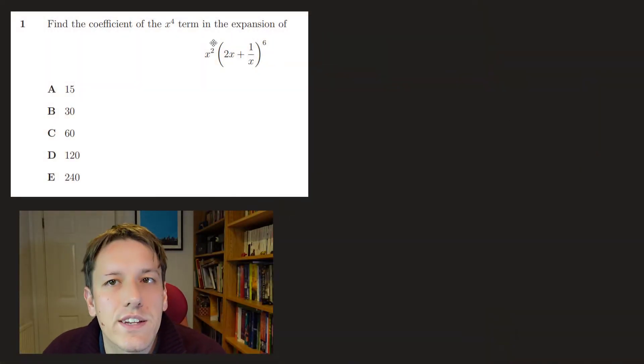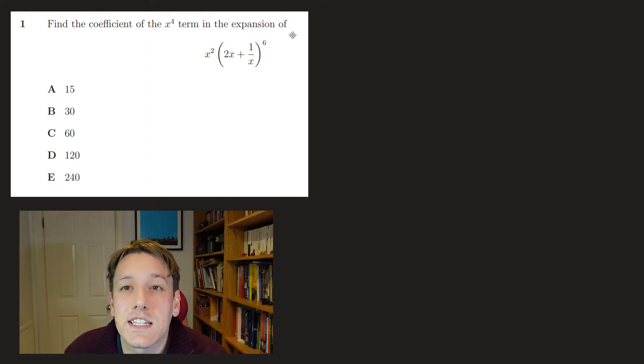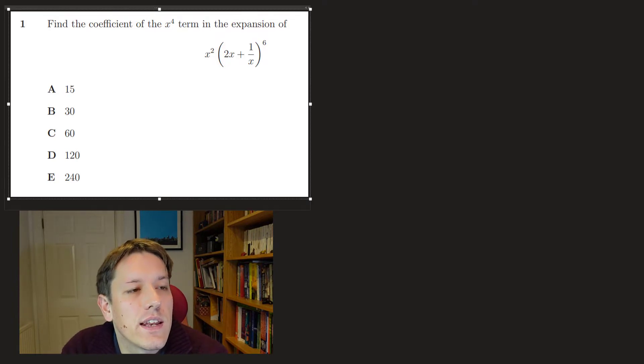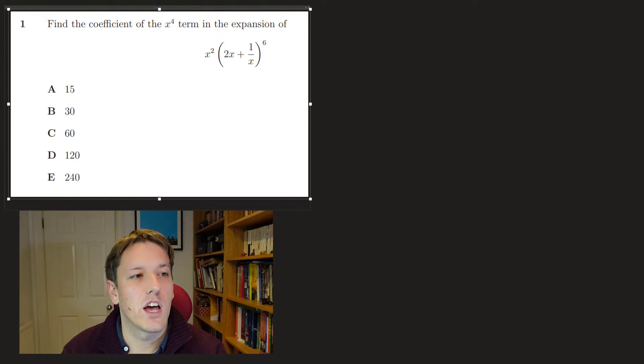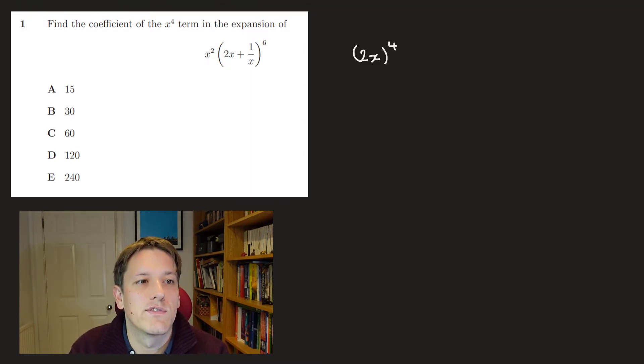So in this question, we want to find the coefficient of the x to the 4 term in this expansion here, and you can see that there's an x squared on the outside, and then we could do a full binomial expansion of this something to the power of 6. But really, we just want to try and isolate this particular term. So if it's going to be x to the 4 overall, I want an x squared term from the (2x + 1/x) to the 6, and then that'll multiply by the x squared. So if you think about it, the right term to take here is the one that's 2x to the power of 4 times 1 over x squared. And you can just try different possibilities until you find the right one.